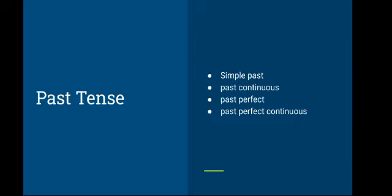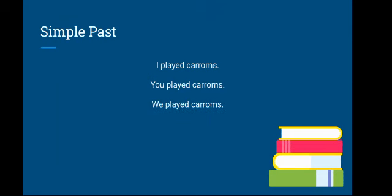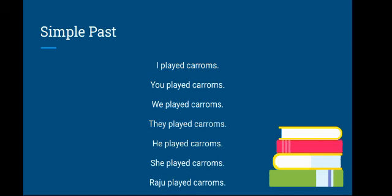Let us discuss simple past tense and go into its sentence structures. I played caroms. You played caroms. We played caroms. They played caroms. He played caroms. She played caroms. Raju played caroms. Observe the verb 'played' here — we need not follow any subject-verb agreement in simple past tense. We use only the V2 form of the verb, that is the past form, 'played'.